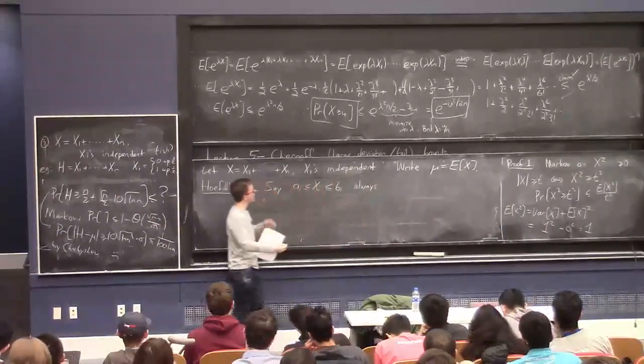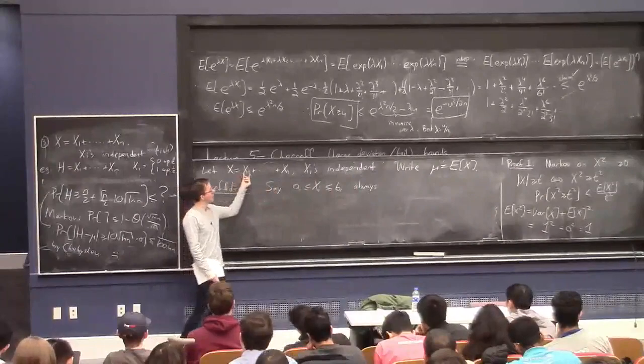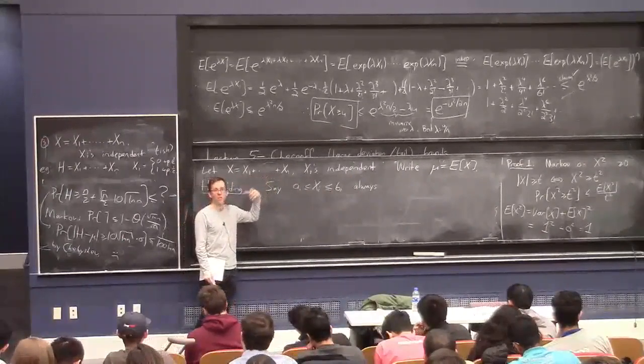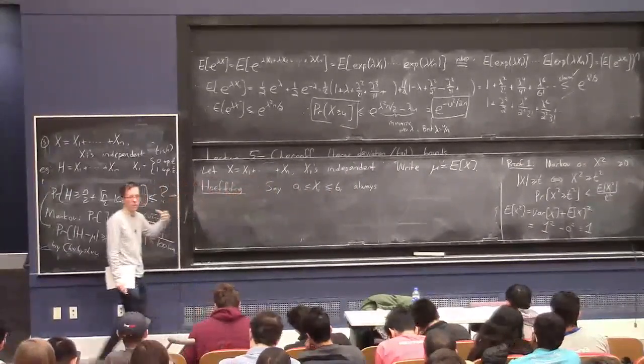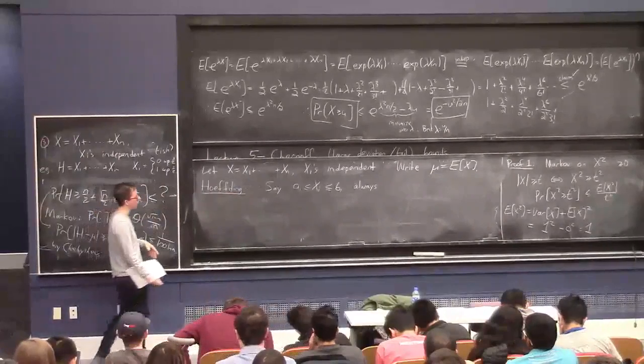So here, you always need to assume something about these independent random variables, that they're not too crazy, or you have some control over them, in order to deduce a Hoeffding or Chernoff type bound.